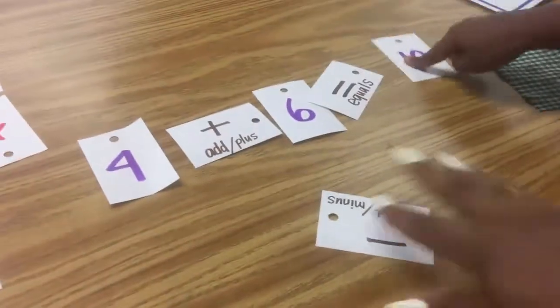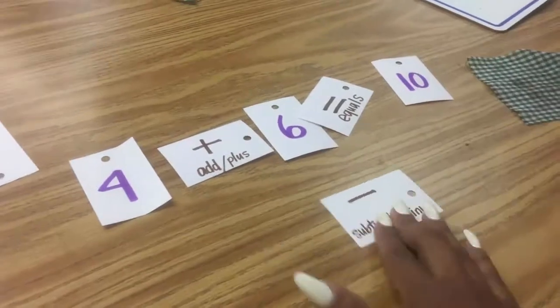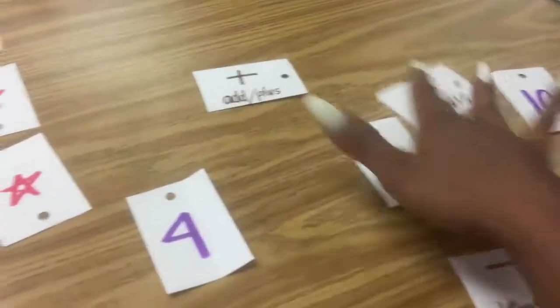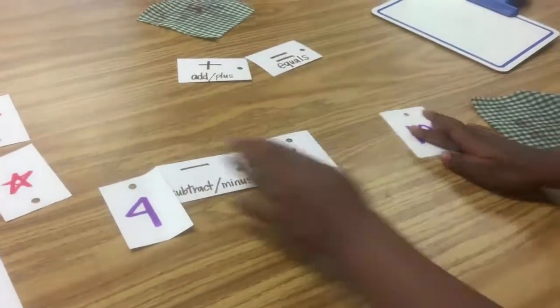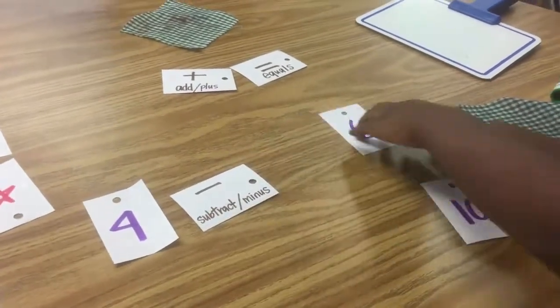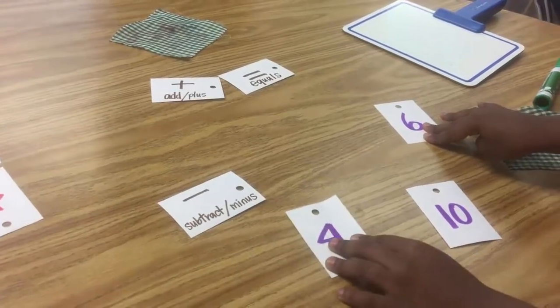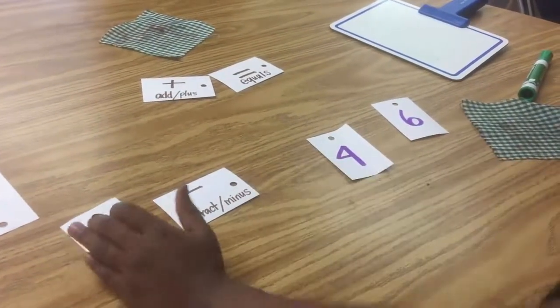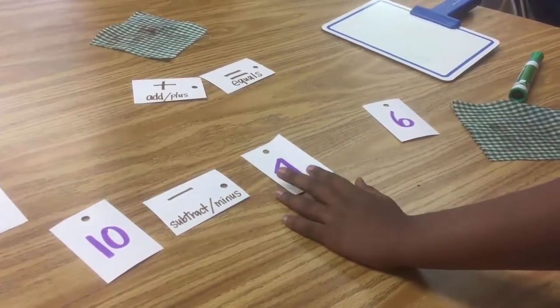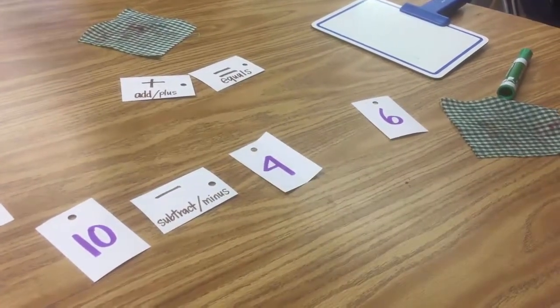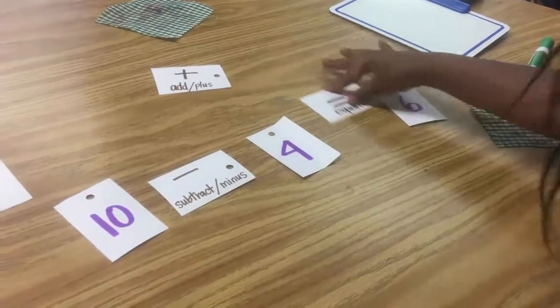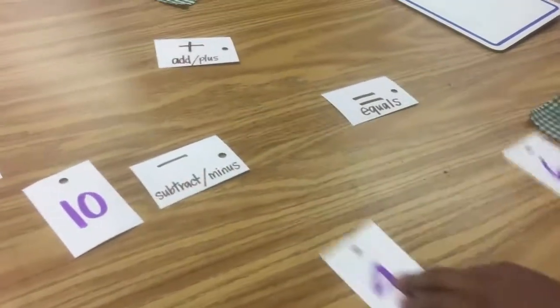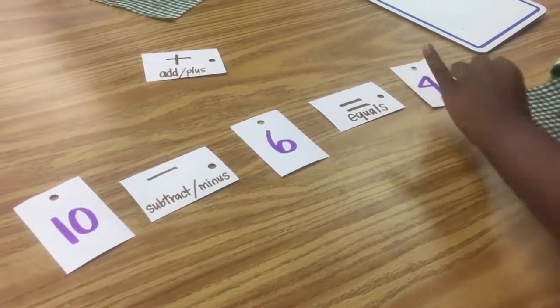Okay. So, now, how could I use the subtraction sentence with these three numbers? How could I relate that? Okay. Now, read that number sentence for me. And it could go like this. Ten minus six equals four.